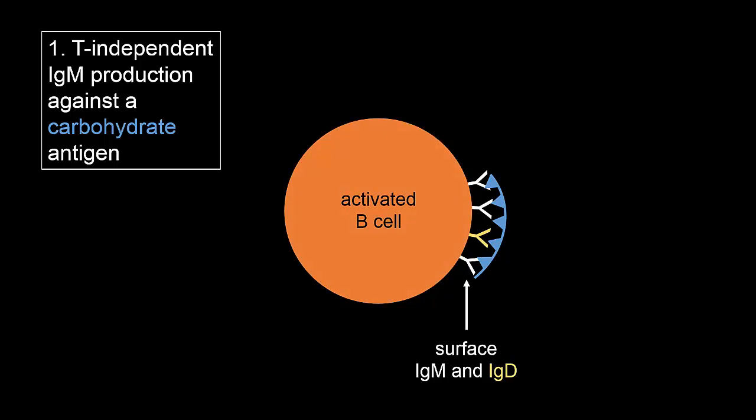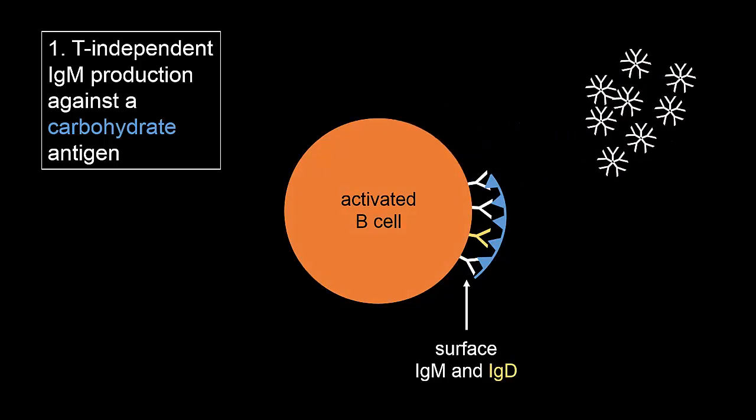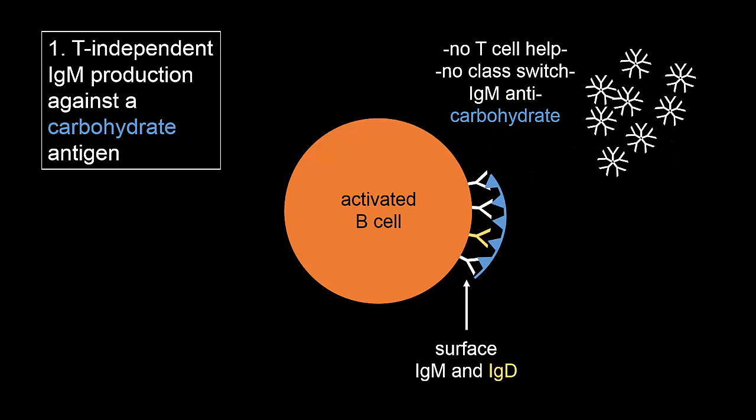The B cell then up-regulates production and release of the first immunoglobulin that B cells make, IgM. Because there is no T cell help involved that would allow class-switching, the B cell remains at the IgM stage.